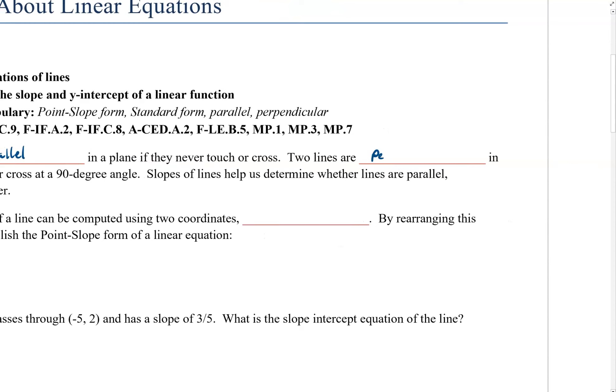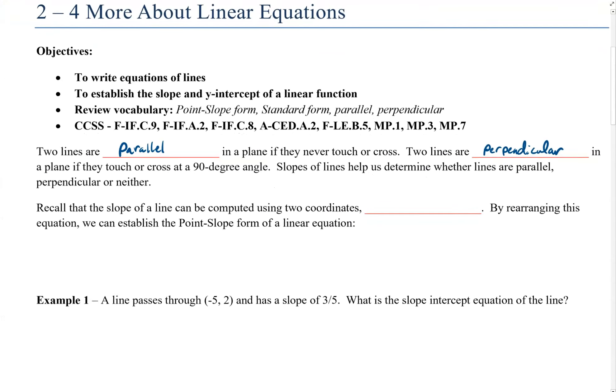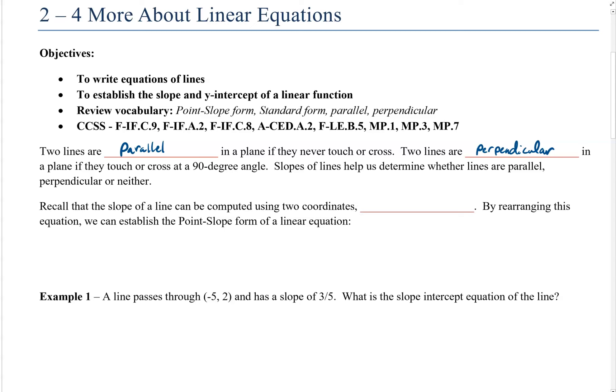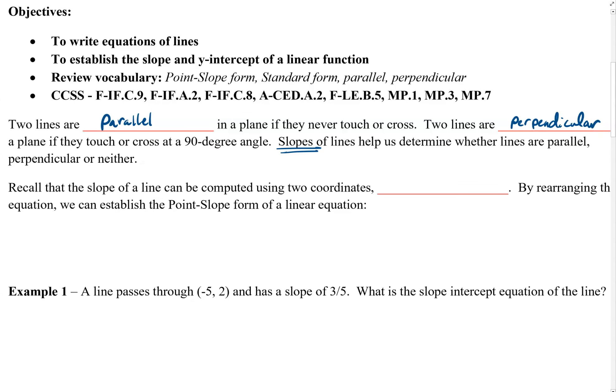Two lines are said to be perpendicular in a plane if they touch or cross at a 90-degree angle. When we plot our lines on a Cartesian coordinate system, the slopes of these lines can help us determine whether these lines are parallel, perpendicular, or neither.